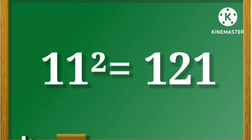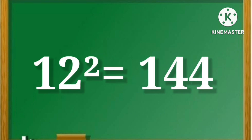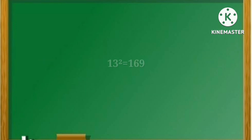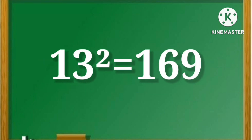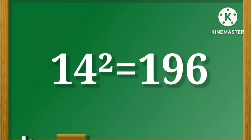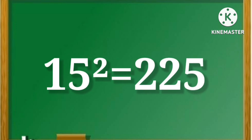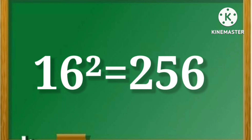11 squared is equal to 121. 12 squared is equal to 144. 13 squared is equal to 169. 14 squared is equal to 196. 15 squared is equal to 225. 16 squared is equal to 256.